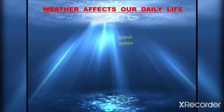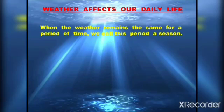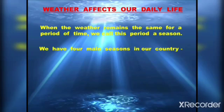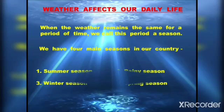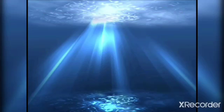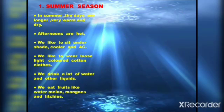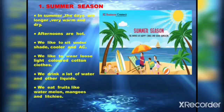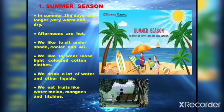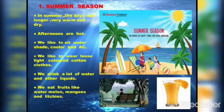Weather affects our daily life. When the weather remains the same for a period of time, we call this period a season. We have four main seasons in our country: summer season, rainy season, winter season, and spring season. In summer, the days are longer, very warm and dry. Afternoons are hot and we like to sit under shade, coolers, and AC. We wear loose, light-colored cotton clothes, drink a lot of water and other liquids, and eat fruits like watermelon, mangoes, and lychees.